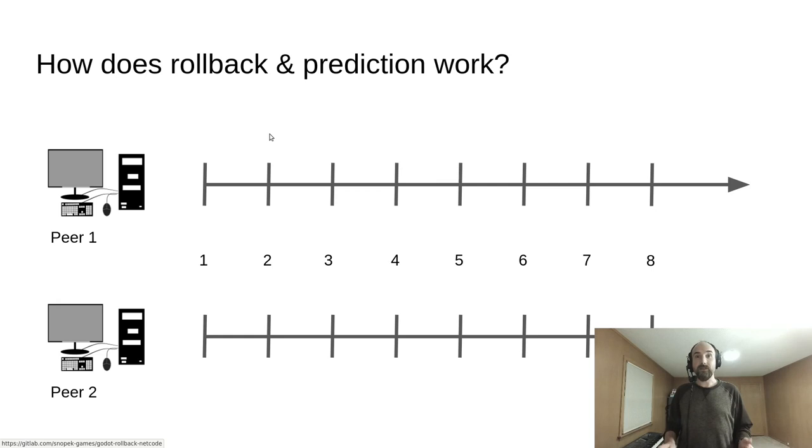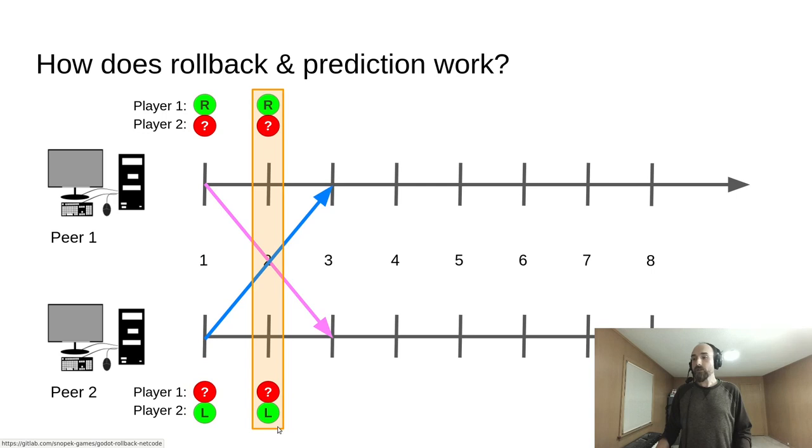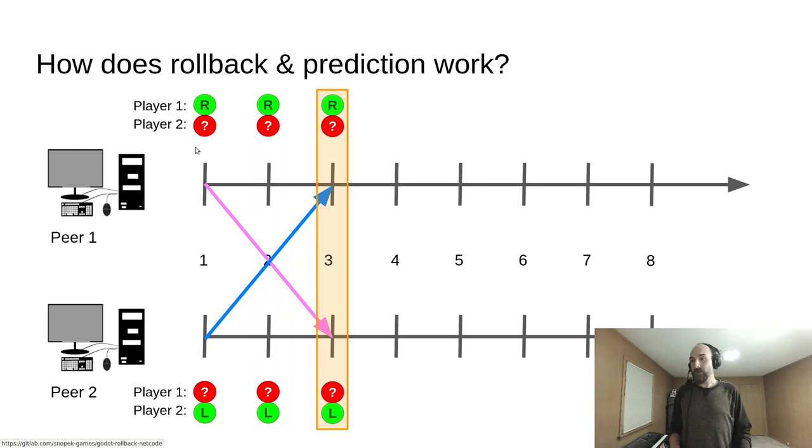So how would rollback and prediction solve this? Peer 1 and peer 2 both have their own idea of what player 1 and player 2 are doing. On frame 1, player 1 is pressing right and player 2 is pressing left. But they have no idea what the other player is doing for two more frames. Frame 2, player 1 is still pressing right, player 2 is still pressing left, we still have no idea what the other player is doing.